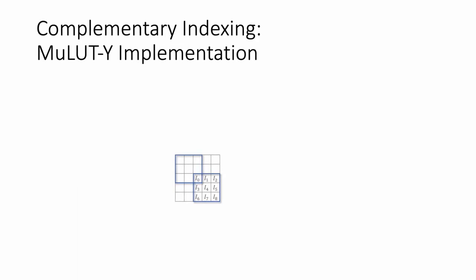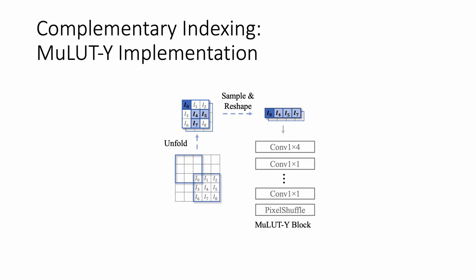As for MuLUT Y, we first unfold the input image by extracting local patches with a sliding window. Then, we sample and reshape these Y-shaped pixels into vectors, which are fed into an asymmetric convolution.